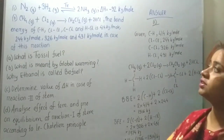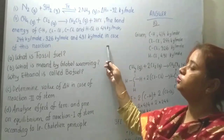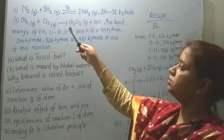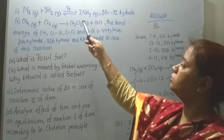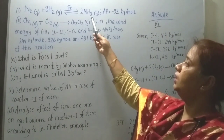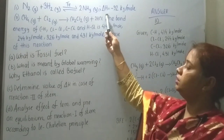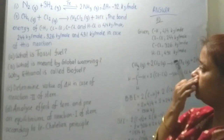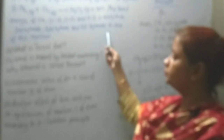Dear learners, now come to creative question number 2. There are two reactions in the stem. Reaction 1: Nitrogen plus hydrogen in the presence of iron powder produces ammonia, where ΔH equals minus 92 kilojoule per mole. Reaction 2: Methane plus chlorine equals methyl chloride plus HCl. The bond energies of C–H, Cl–Cl, C–Cl, and H–Cl have been given.